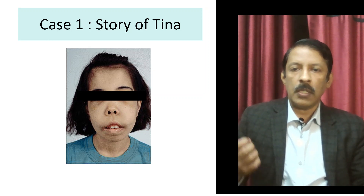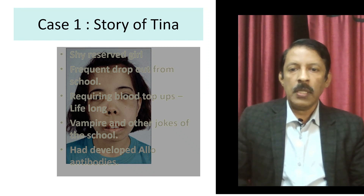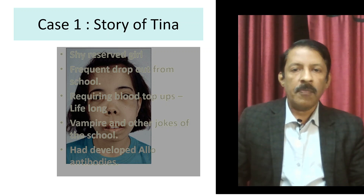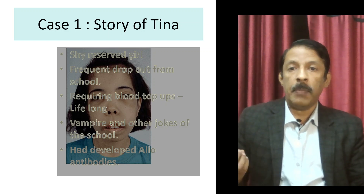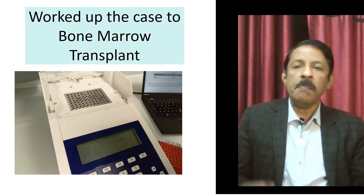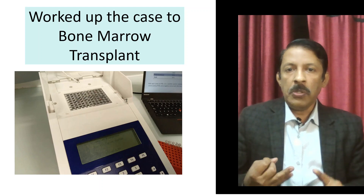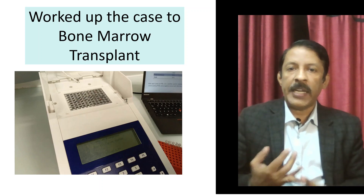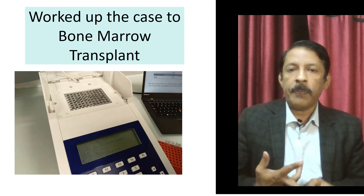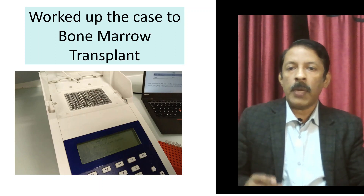We'll start with the first case of Tina, a 12-year-old girl and a classmate of my daughter. She required frequent blood top-ups because she had a blood disorder, and this led to jokes that she was a vampire. The worst part was she had allo-antibodies, so even getting a blood transfusion for this thalassemic child was very difficult. In my lab with a basic simple apparatus — the PCR — we were able to find out the mutation of the child. We were able to do sequencing of the chorionic villi to find out whether the next child the parents had would have thalassemia or not. We were able to do HLA typing using the same thermocycler.